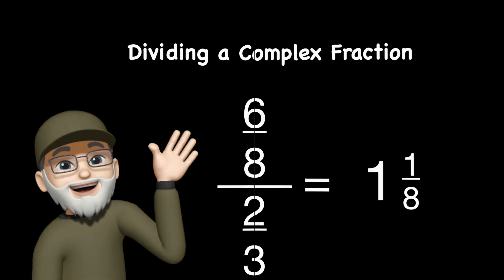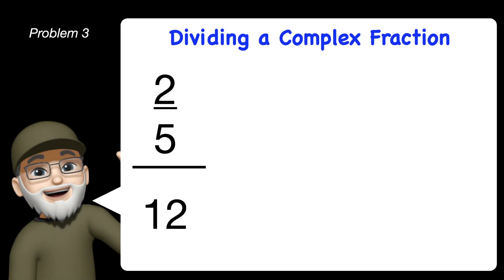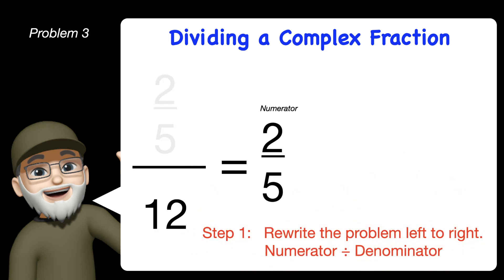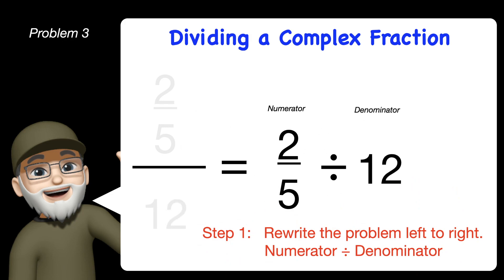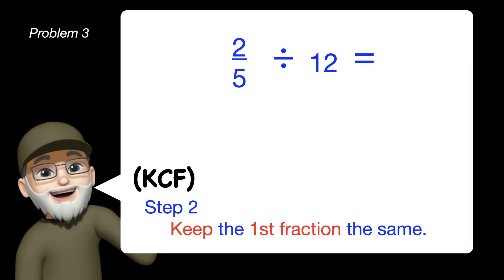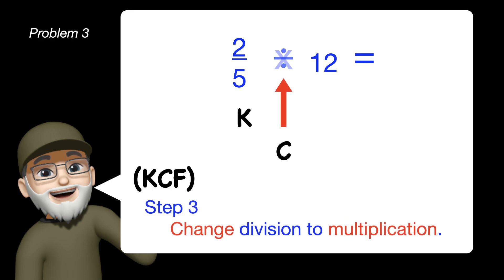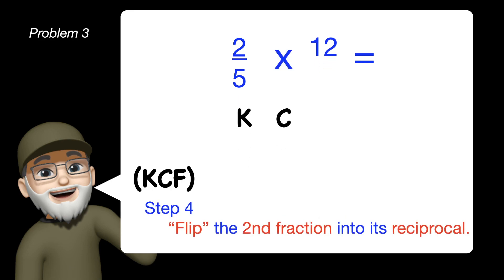Let's look at problem 2, dividing a complex fraction. Notice this time that we have 12 as our denominator. That is not a fraction, that's a whole number, but because 2 fifths as the numerator is a fraction, this is still a complex fraction. Our first step is we rewrite the problem from left to right, then we keep the first fraction the same, we change division into multiplication, and we will flip the second fraction into its reciprocal.